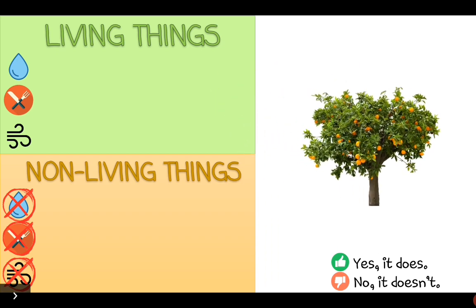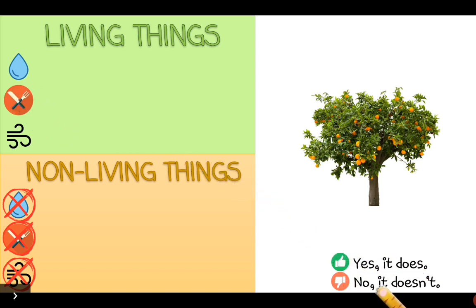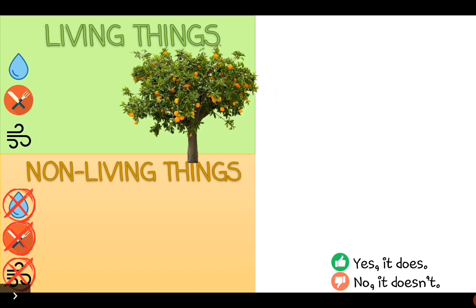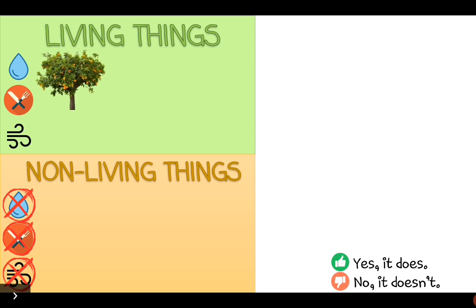The first thing we have is an orange tree. Does this orange tree need water? Yes, it does. Does the tree need food? Yes, it does. Remember, the soil and sunlight is the food they need, or what they need to make food. And does the tree need air? Yes, it does. So this tree is a living thing, because it needs water, food, and air. Fantastic!